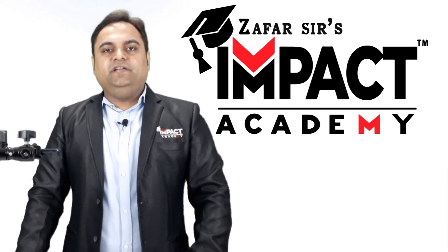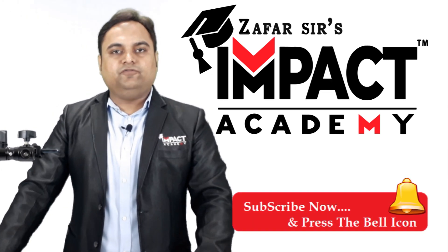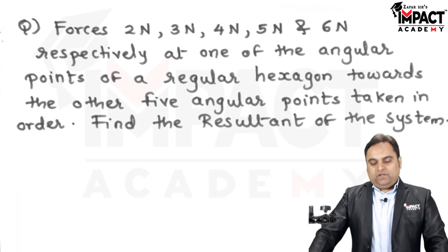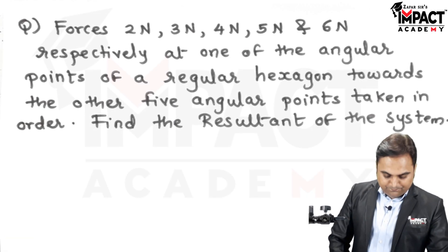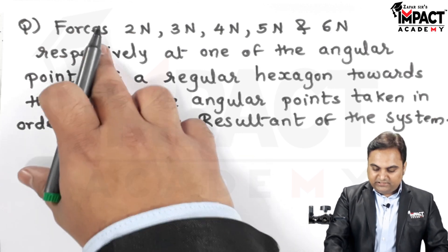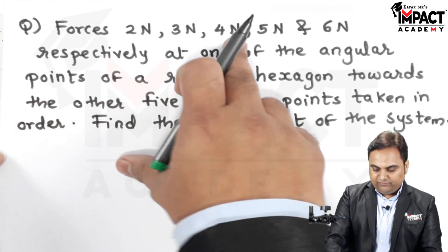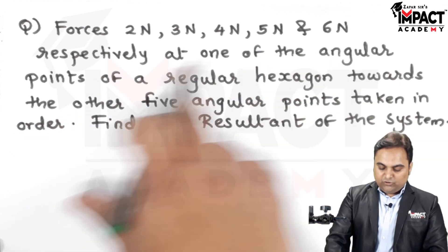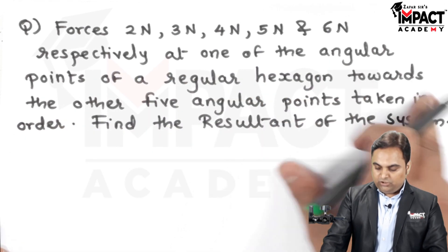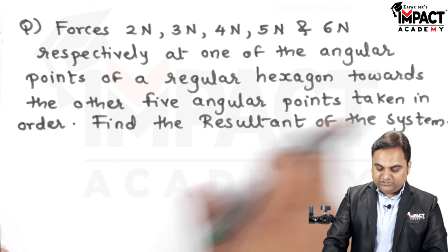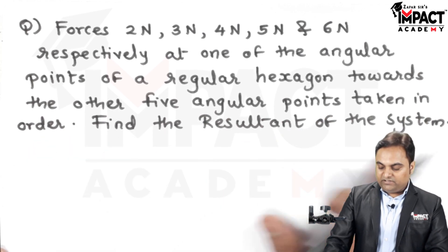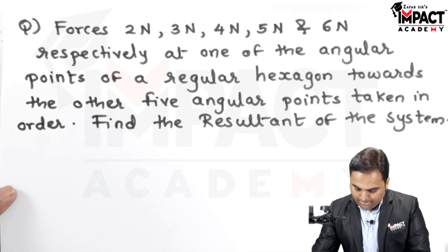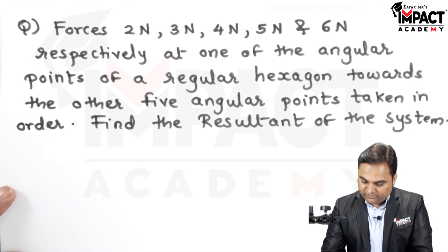Hi friends, in this video I will be explaining the problem on resultant of concurrent force system. Here is the question: forces of 2, 3, 4, 5, and 6 newton act respectively at one of the angular points of a regular hexagon towards the other five angular points taken in order. Find the resultant of the system. I'll draw the diagram and explain this.